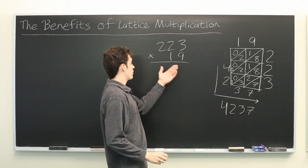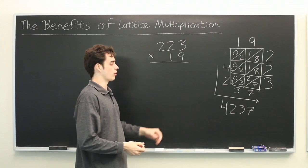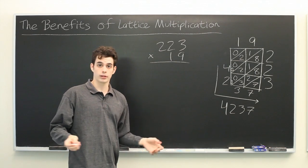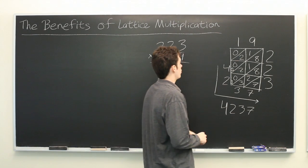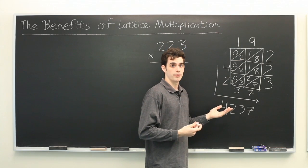And of course if you multiply it out using a traditional method you'll get the same result as you would if you did it on the calculator. So the question is what are the benefits of using this method?